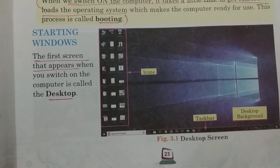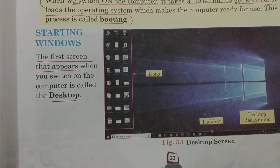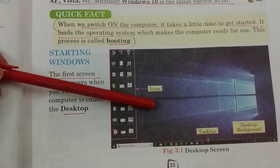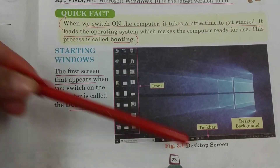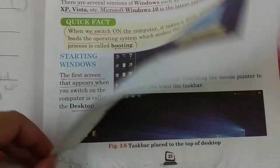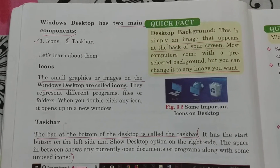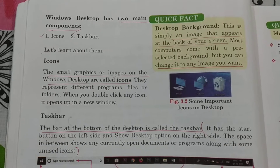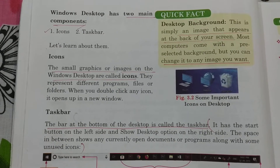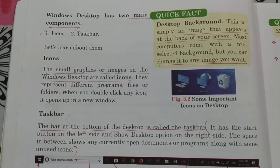Next is starting Windows. The first screen that appears when we start the computer is the desktop. You can see it in figure 3.1 — this is the desktop, and here are the icons at the bottom. On page 24, Windows desktop has two components: icons and taskbar. Those small graphics or images on the desktop are called icons. If asked what icons are, the answer is: small graphics or images.